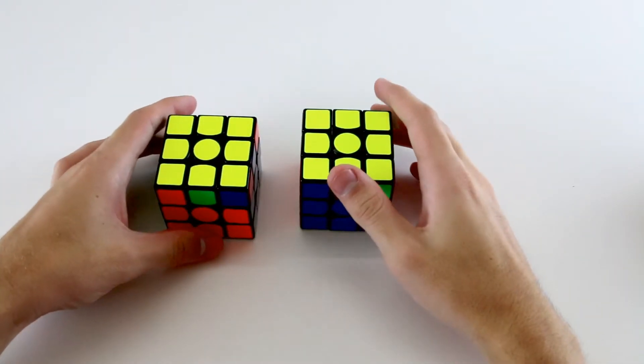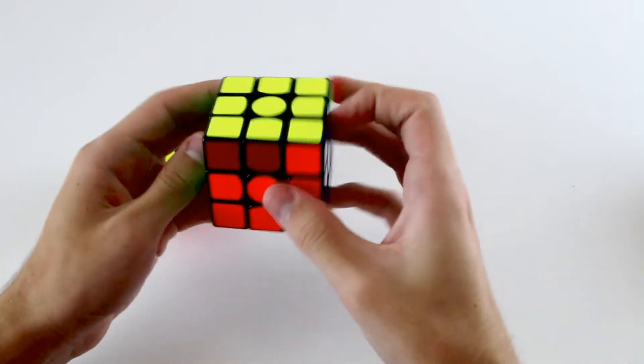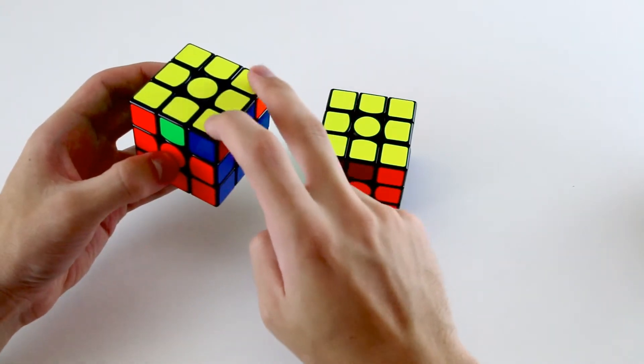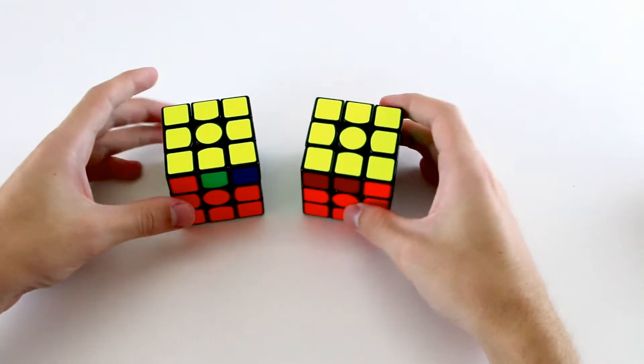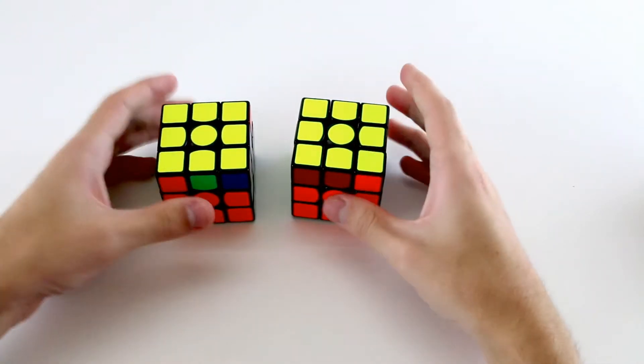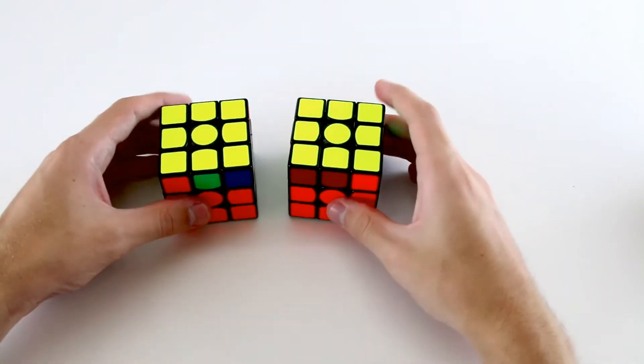It's also useful to be able to quickly recognize whether you have diagonally swapped corners, such as this case, or corners that need to be swapped adjacent to one another. So that in your head, once you notice whether it's diagonal or an adjacent swap of corners, you can reduce the number of cases that it could possibly be, and you're only thinking within a subset of PLL cases.